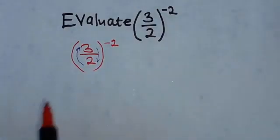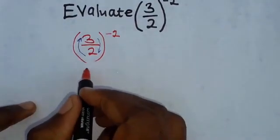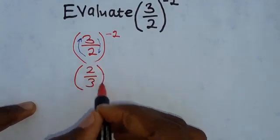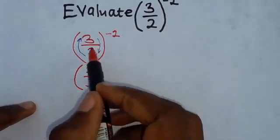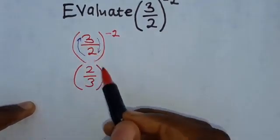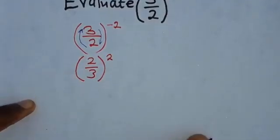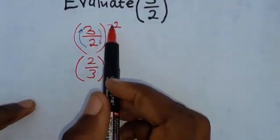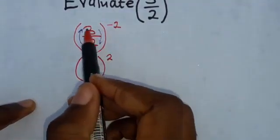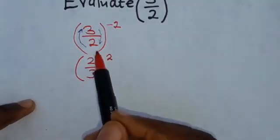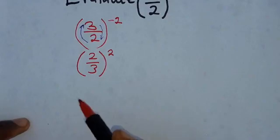So what we're going to have is 2 over 3. Since we've swapped the denominator with the numerator, the power will become positive. Every time when you're given a negative power, just swap the numerator with the denominator, then the power will become positive.